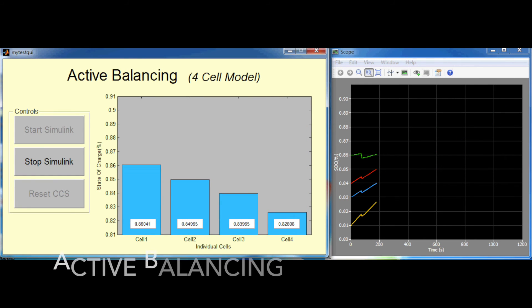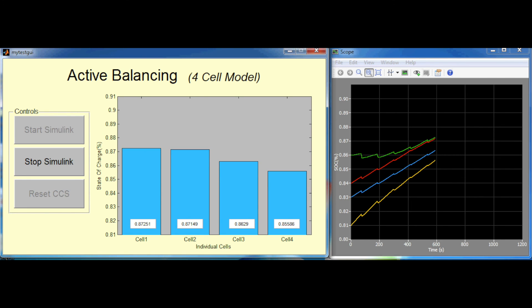In active balancing, as mentioned earlier, energy is drawn from the most charged cell and shuttled to the least charged cell. This can be seen on the right-hand side where the cell with the highest SOC is depleted to the SOC level of the other cells by shuttling its energy to cell 4. This topology has control logic that is more complex, but its advantages lie in the fact that energy is not wasted.